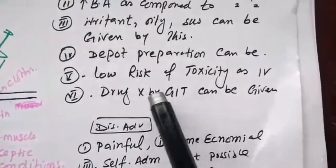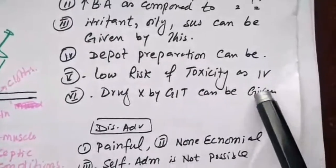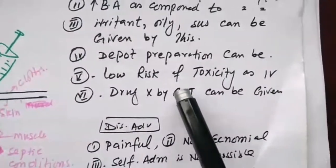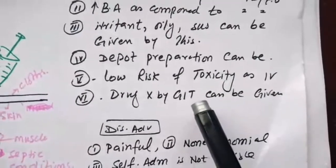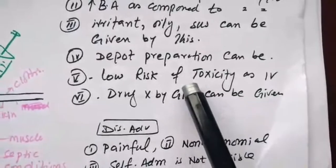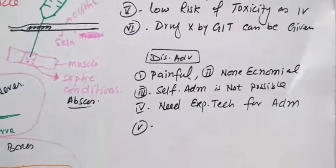Drugs which are not suitable for the GIT line may be given by this route. Those drugs which can interact with GIT enzymes or GIT acidity, we can give those drugs through IM route.